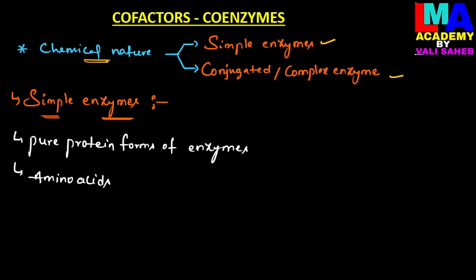Simple enzymes are pure protein forms of enzymes. About 99% of enzymes are made up of pure proteins. If we observe their chemical structure, they have only a protein part. The enzymes which are made up of pure proteins are called simple enzymes.